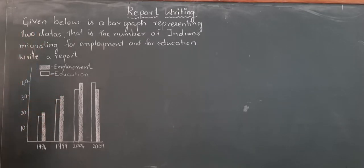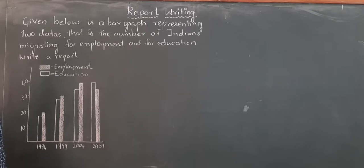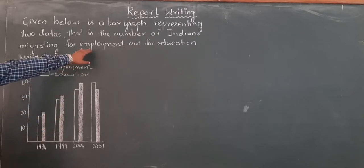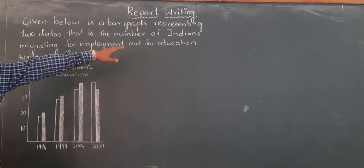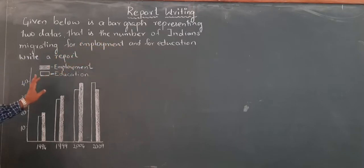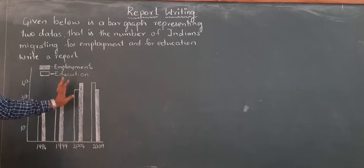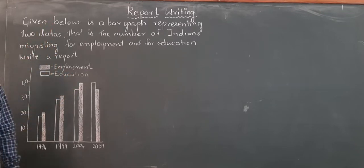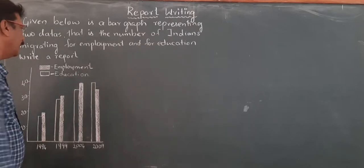Migration — those Indians who are going out of our country for living and learning. One data is for education and the second is for employment. There is a bar graph showing these two sets of data. Let us try to read it from the beginning.